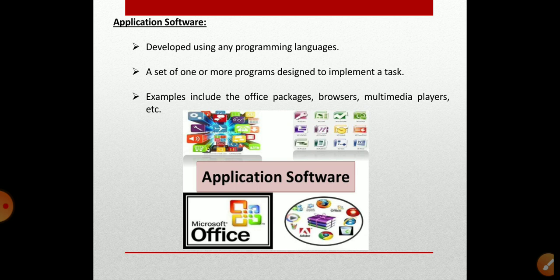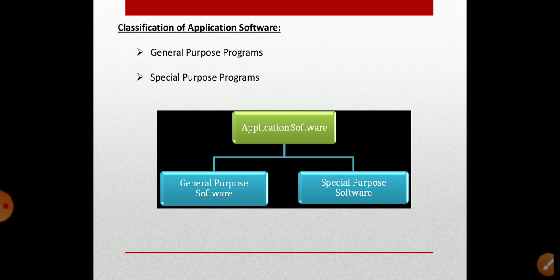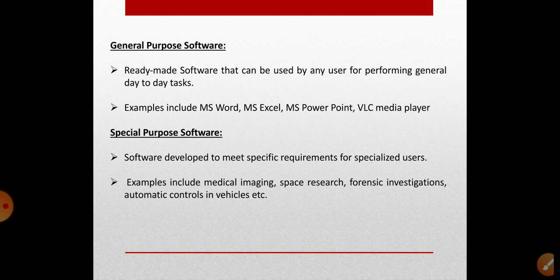There are two main types of application software. The first is general purpose application software. As the name indicates, it is used for generic purposes and can be used for a variety of tasks by a variety of users. It is not limited to one particular function. Examples include word processors, spreadsheet programs, and presentation software. These are used by many users and are called generic or general purpose software.